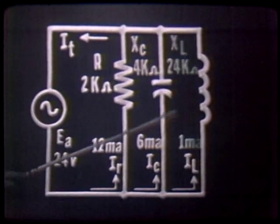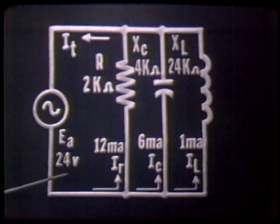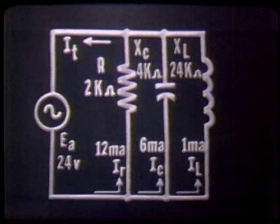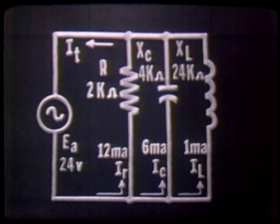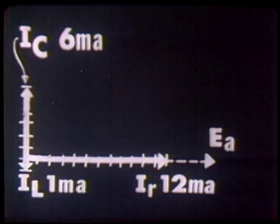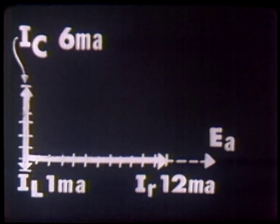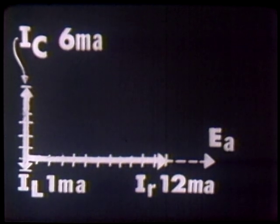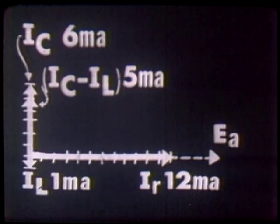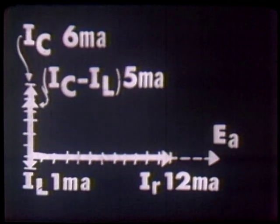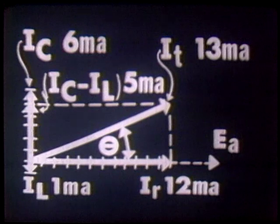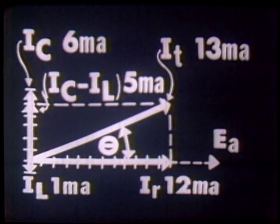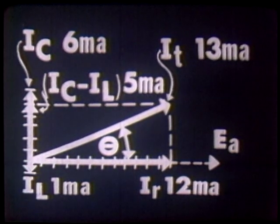Our third current, IL: assuming an inductive reactance of 24K ohms with 24 volts applied, by Ohm's law we have 1 milliampere of current. IL lags IR by an angle of 90 degrees. Since IL and IC are 180 degrees out of phase, IL can be subtracted from IC leaving a vector sum of 5 milliamperes. We construct our parallelogram and draw in our current vector IT, which measures 13 units long, representing a total current of 13 milliamperes.